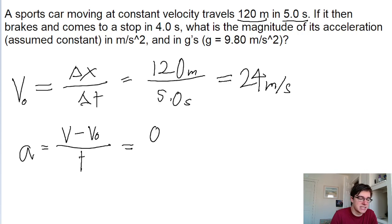So we know the final velocity is zero, as we just discussed. The initial velocity is 24 meters per second, and it's divided by a time interval of four seconds. So if we put this into a calculator, we get negative six meters per second squared.